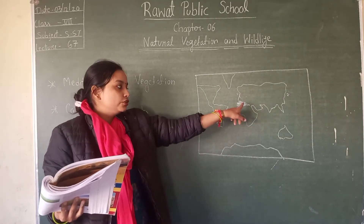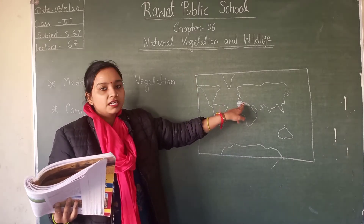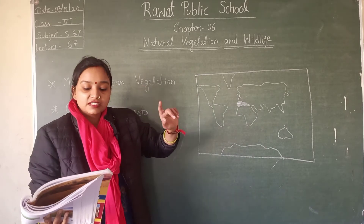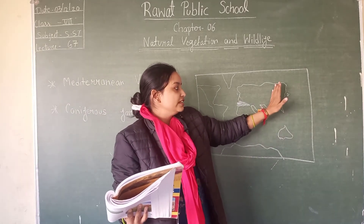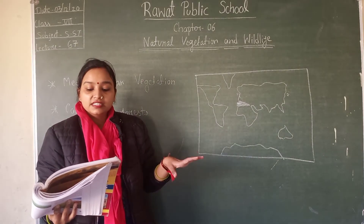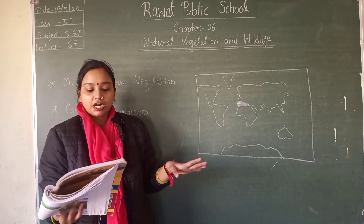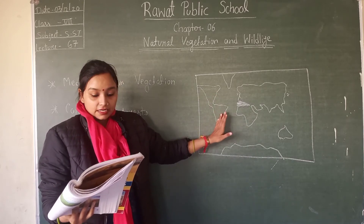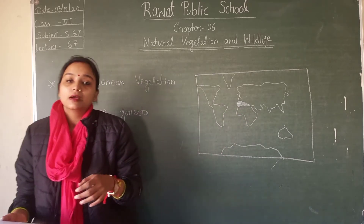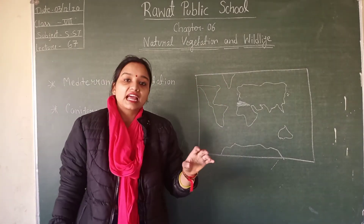Mediterranean vegetation is found in Southern Europe around the Mediterranean Sea, the northern part of Africa, and part of West Asia. Apart from these areas, it is also found in California in the USA, the southwestern part of South America, and Australia, because these regions experience the same Mediterranean weather and climate.